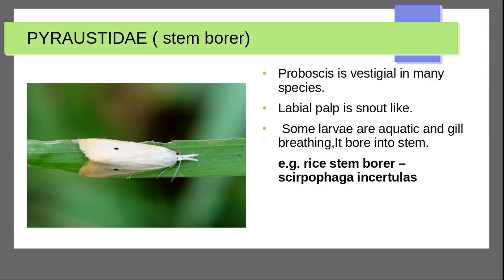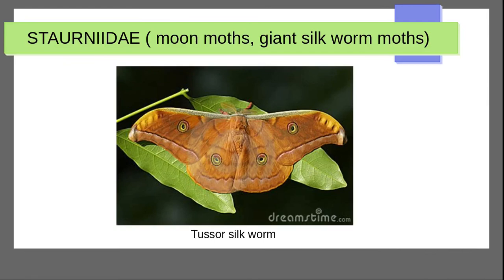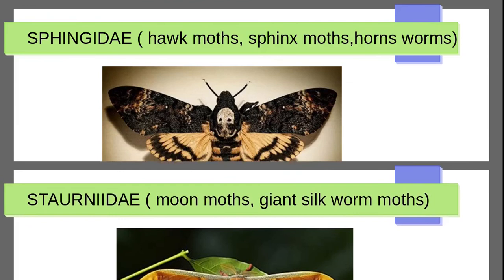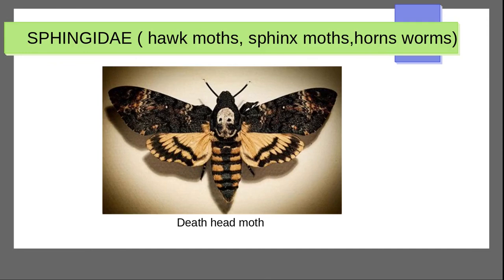Proboscis means an elongated appendage formed from the head. Next moth family is Saturniidae. Characteristic features: gray color with spots on wings. Next is Sphingidae — hawk moths. Dead head moth is one characteristic example, known for black coloration on the thorax and attraction to light.